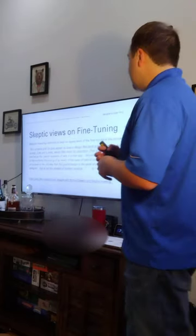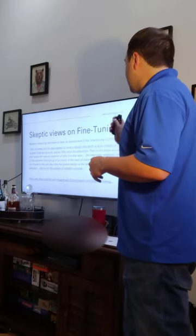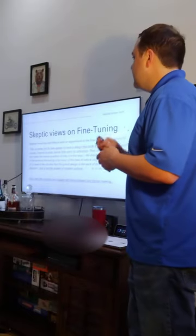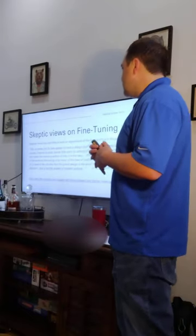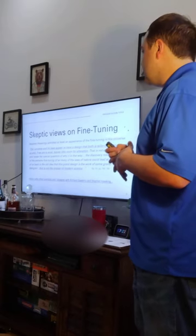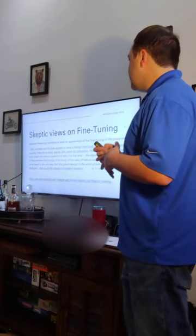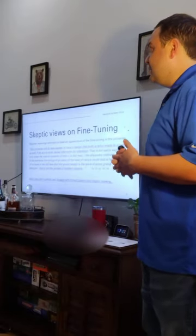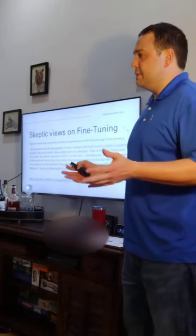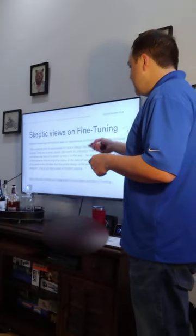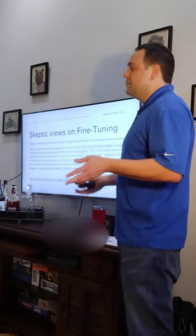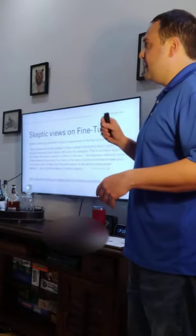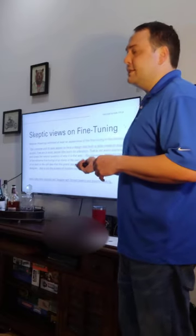And then we've also got Stephen Hawking, who also commented on this, and he actually admitted that there is some sort of design for the universe, or that it appears. Our universe and its laws appear to have a design that is both tailor-made to support us, and if we are to exist, leaves little room for alteration. That's an admission that there appears to be some sort of design, whether they can believe that there is or not. But as you can see at the bottom of the quote, he does not believe that there is actual intelligent design.